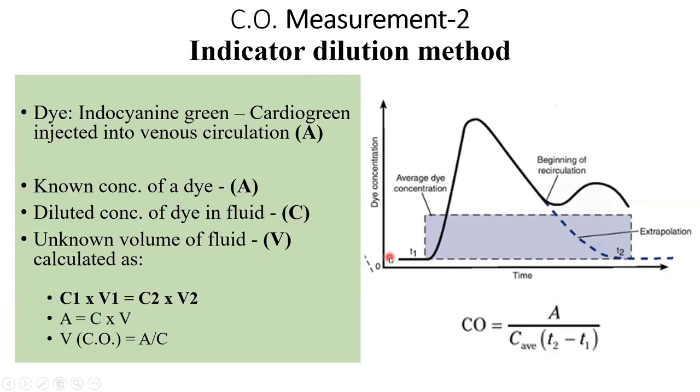As you can see in this graph, we plot the dye concentration in the blood against time. You can see that the concentration does not go up significantly initially.